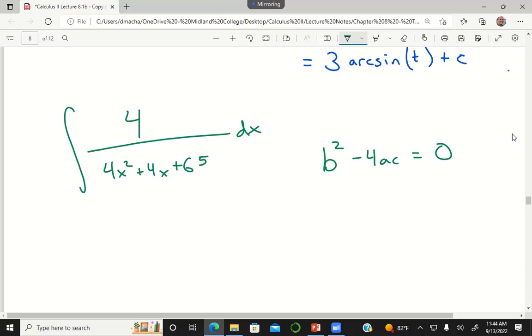My b is 4, so 4 squared minus 4 times a is 4 times c. We're gonna solve for c, so we're gonna leave that as just c for right now. That tells me 16 minus 16c is equal to zero, so c has to be positive one.